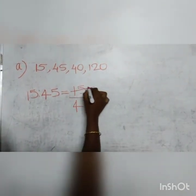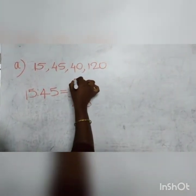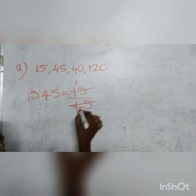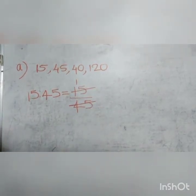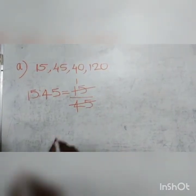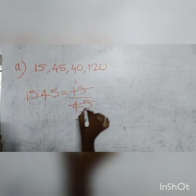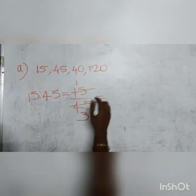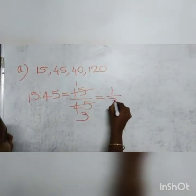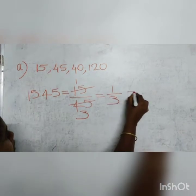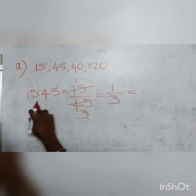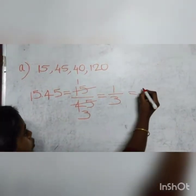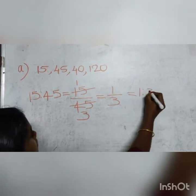Since 1 times 15 is 15, we write 1 here. And since 3 times 15 is 45, we write 3. Now the fraction becomes 1 by 3. And hence, the ratio of 15 is to 45 is 1 is to 3.